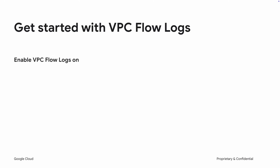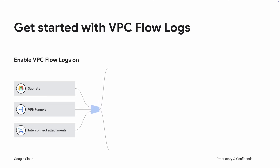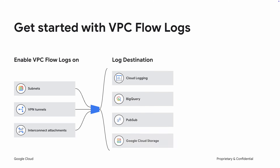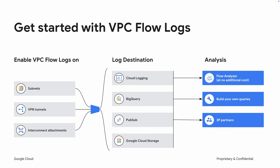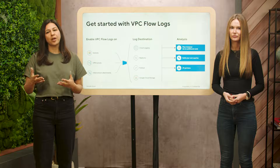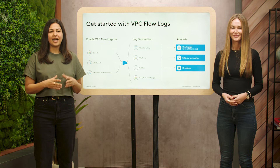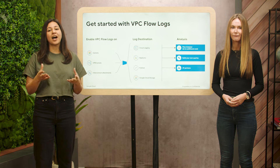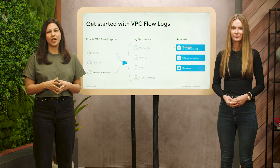You can enable VPC flow logs on your subnets, VLAN attachments, and VPN tunnels, giving you comprehensive coverage of your network. Once enabled, the flow logs generated can be sent to Cloud Logging, BigQuery, Cloud Storage, or Pub/Sub. Logs stored in Cloud Logging can be analyzed using our native analysis tool, Flow Analyzer, at no additional cost. To analyze logs stored in BigQuery, you can build your own queries. Logs from Pub/Sub can be sent to third-party partners for analysis. And with that, I'll hand it over to Mary, who will walk you through a demo.